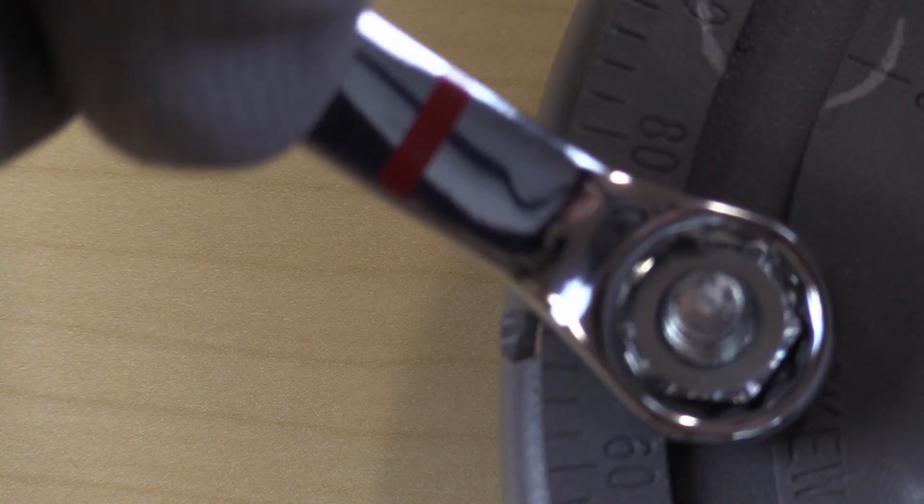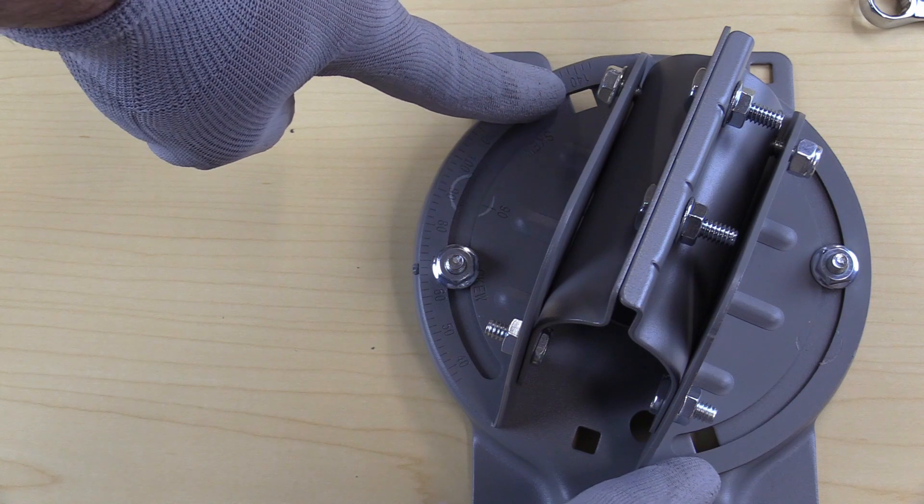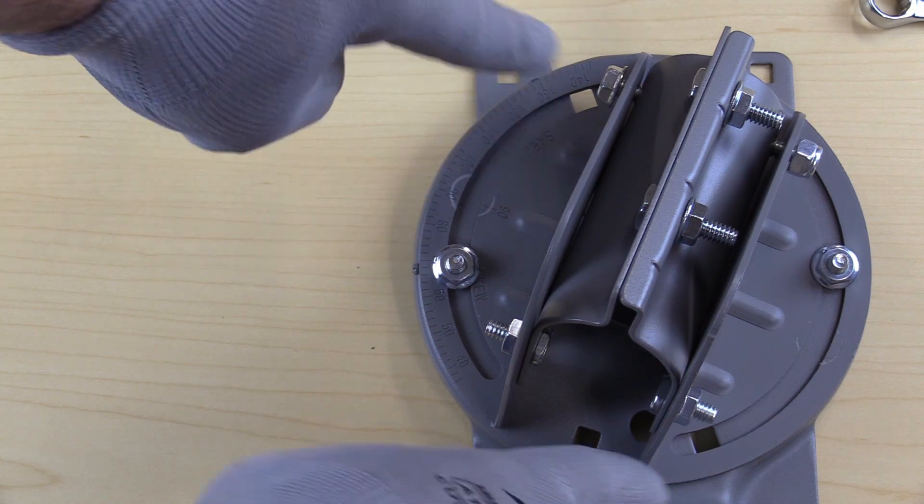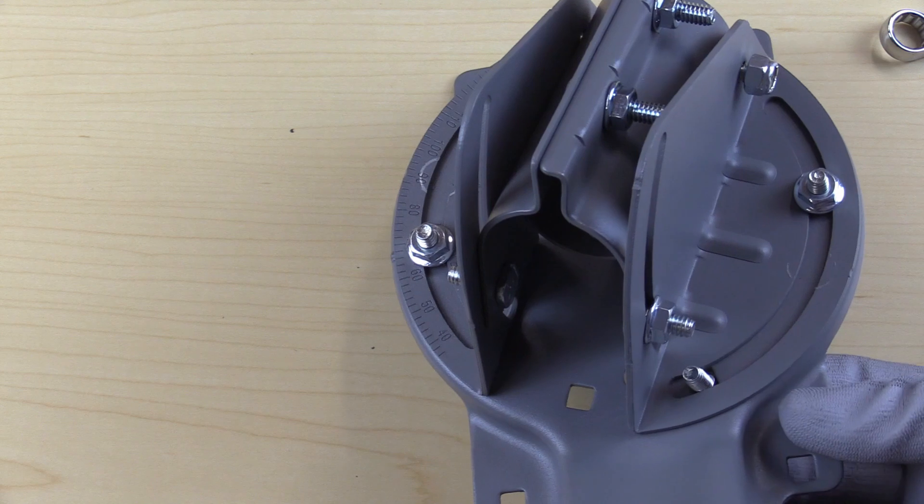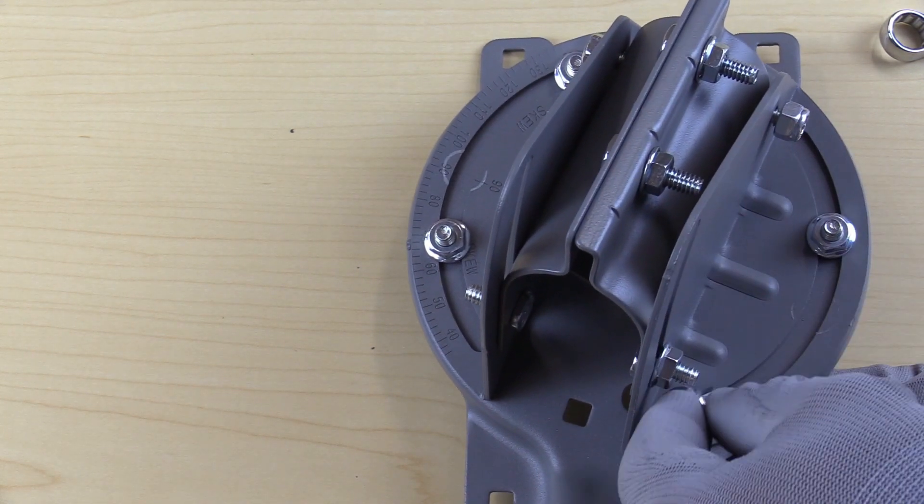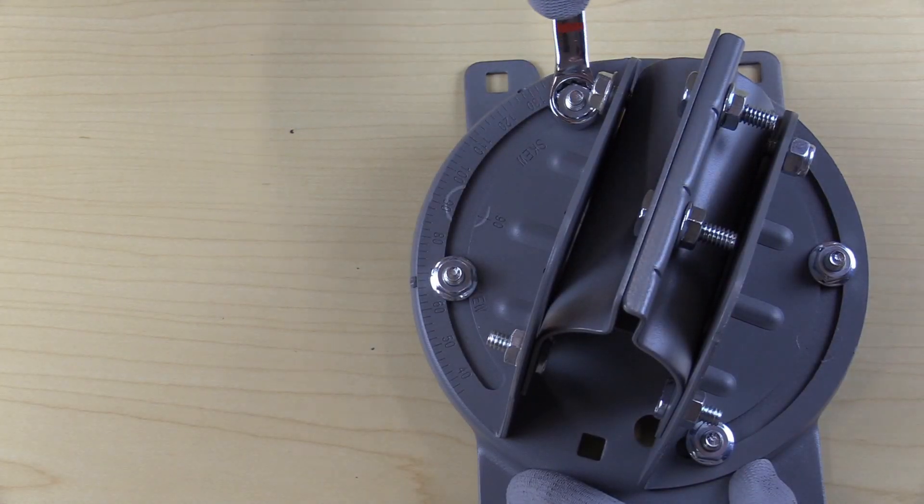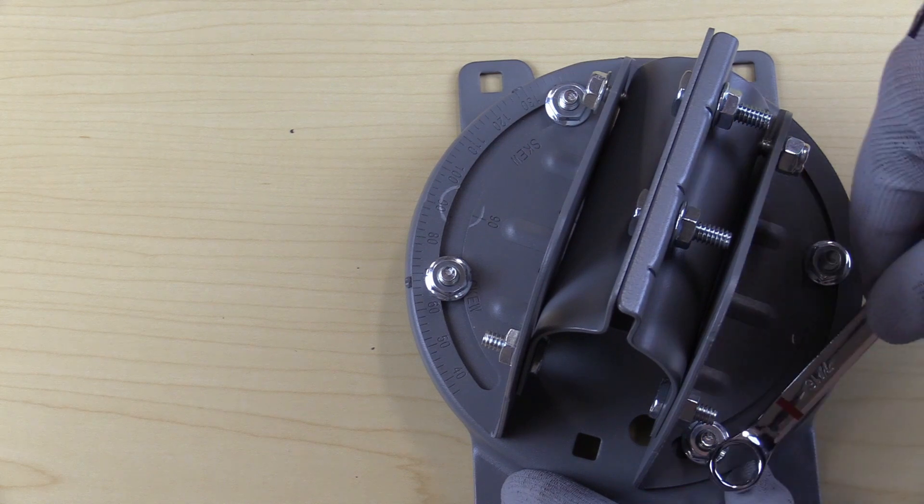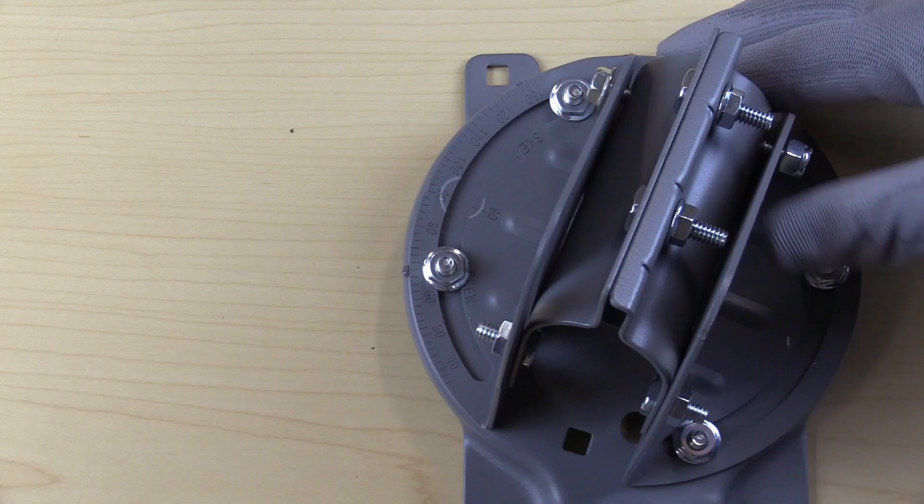Now snug the two skew plate bolts with your 7/16 wrench. If you look to the upper left and lower right of the skew plate, you will see two more skew plate bolt holes are now exposed. From the hardware kit, place the two non-finished carriage bolts into the skew plate bolt holes from the bottom of the skew assembly. Add two nuts to the bolts and snug them using your 7/16 wrench. That's it. The skew is now set.